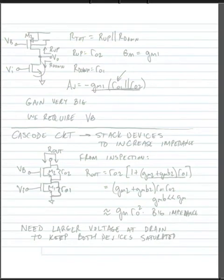All right, so we determined that we don't want to use a diode load when trying to make a high gain amplifier, so let's instead look at using a PMOS current source as a load.